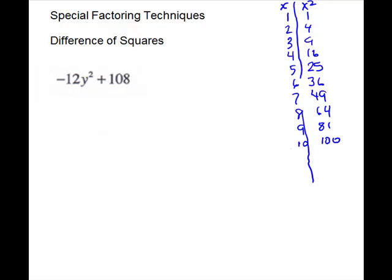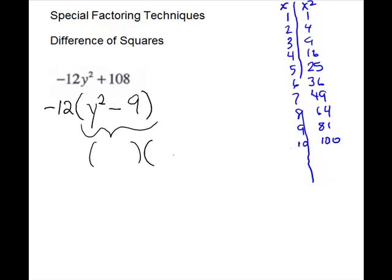For this problem, we have two terms, but first of all we definitely are going to try GCF. We don't like this minus at the front, so we're going to take out a negative GCF. The 12 actually goes into 108, so we can take out a negative 12 for a GCF. And that will leave y² minus 9. Then this is a difference of squares: so y plus 3, y minus 3, and we'll bring down our negative 12.